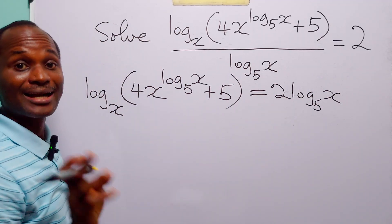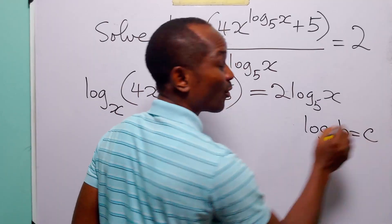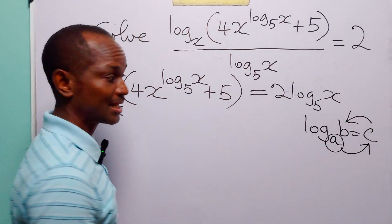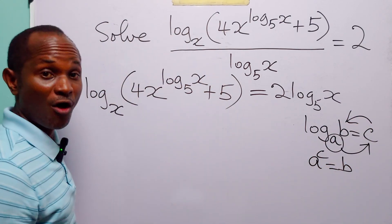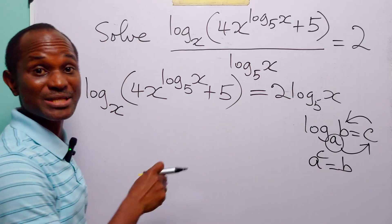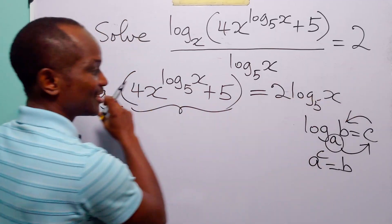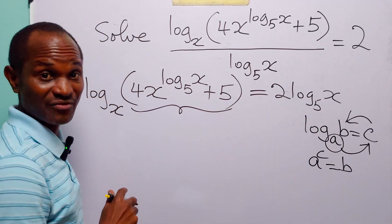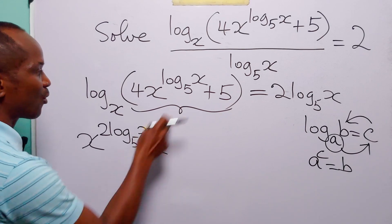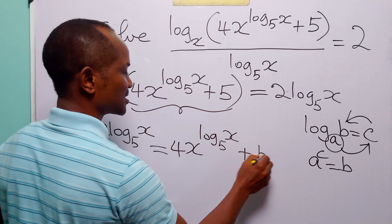And this is going to be equal to 2 times log base 5 of x. Now, recall that when we have an equation that looks like log base a of b equals c, this simply means that a to the power c is equal to b. In this case, a is x, c is 2 times log base 5 of x, and b is this expression. So we can rewrite this equation in the form x to the power 2 times log base 5 of x equals 4x to the power log base 5 of x plus 5.